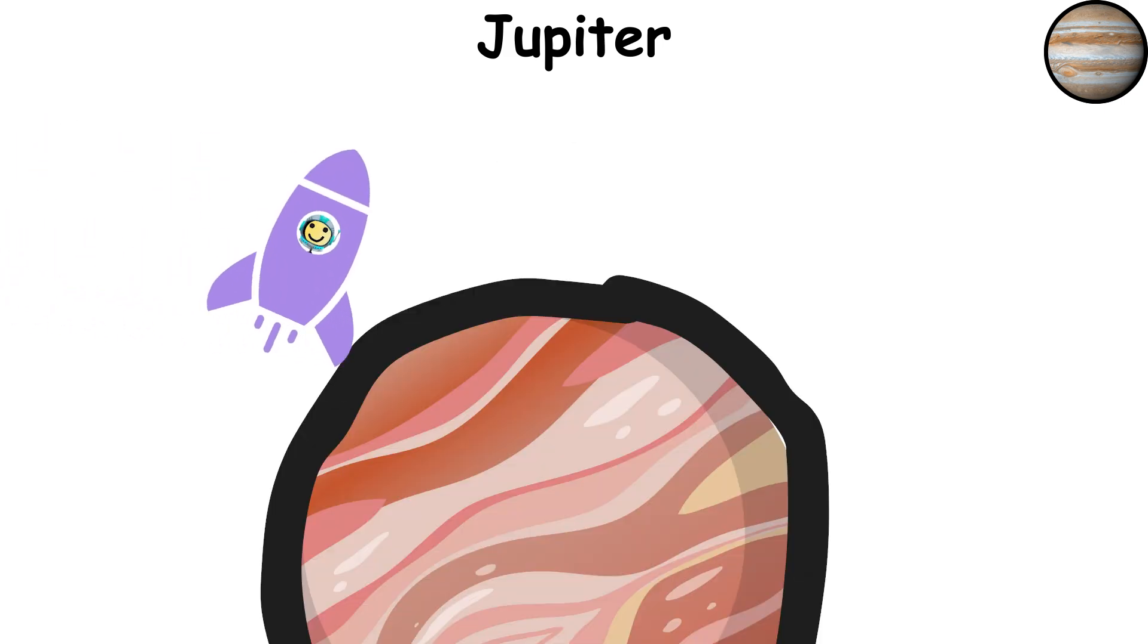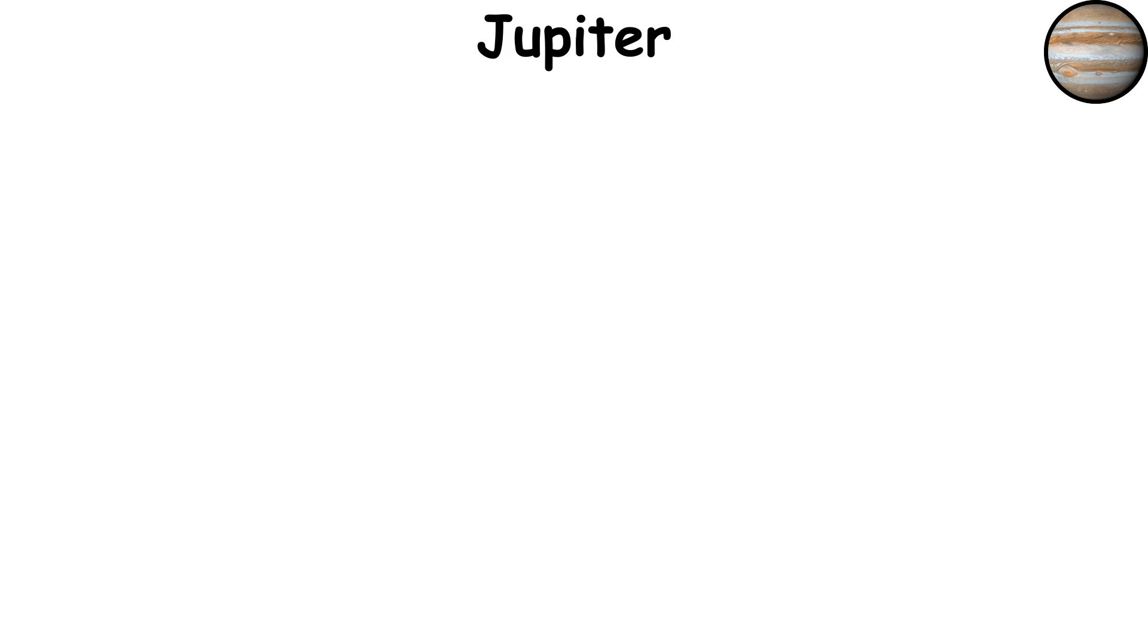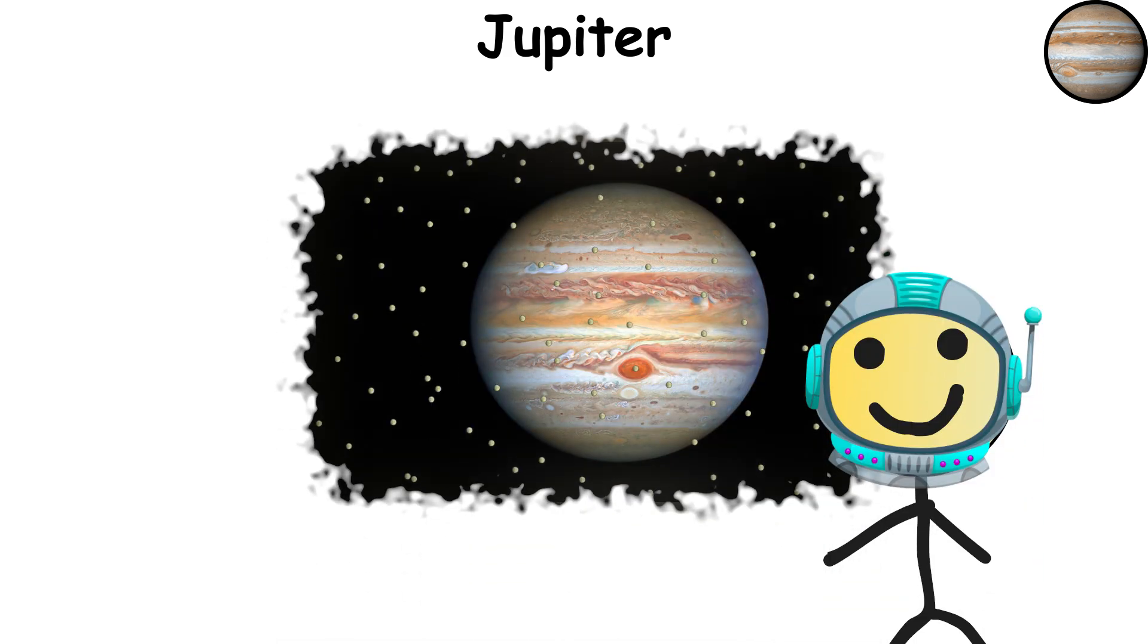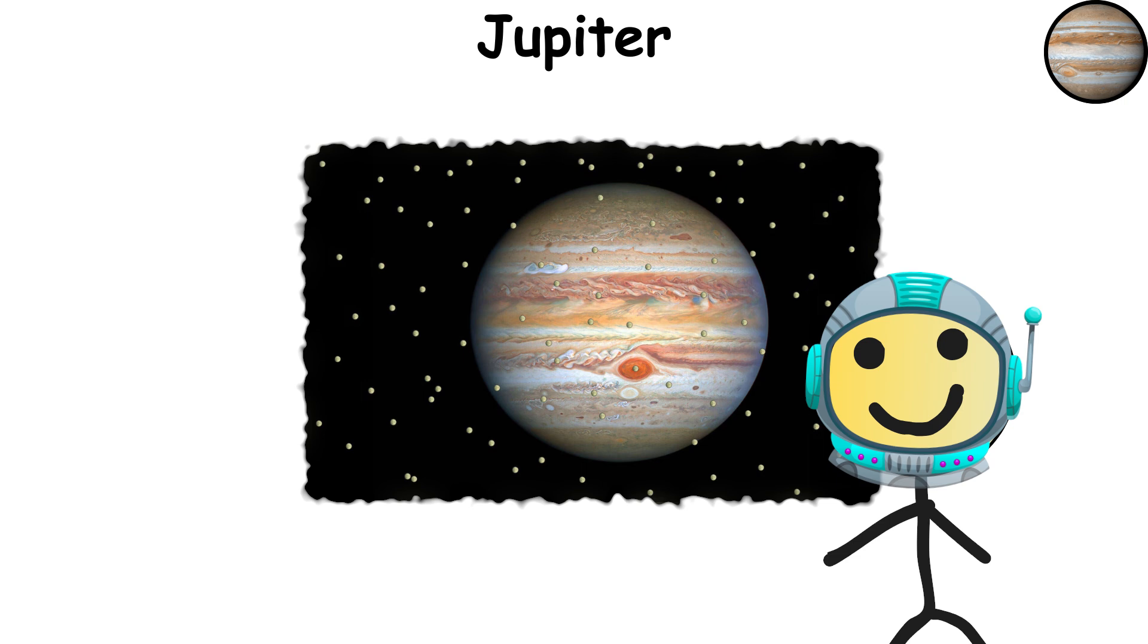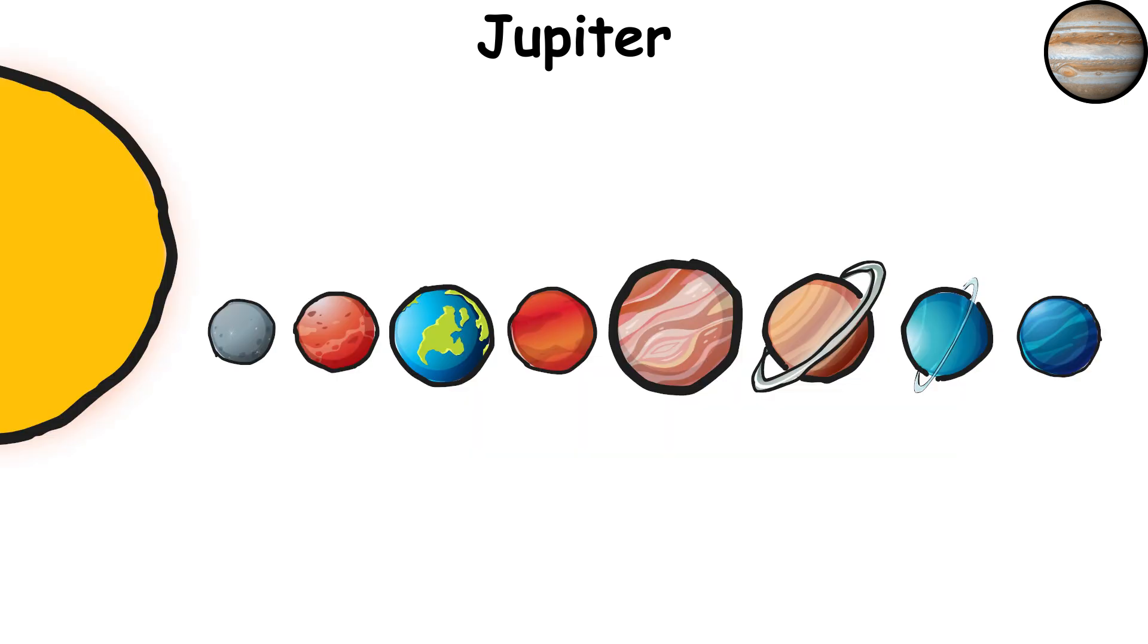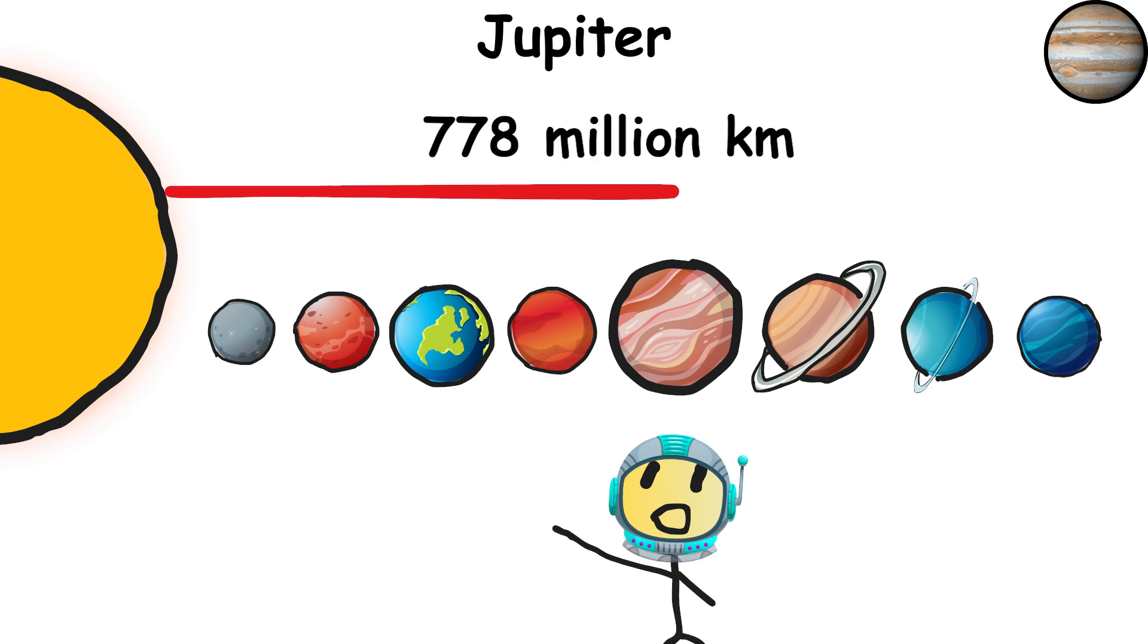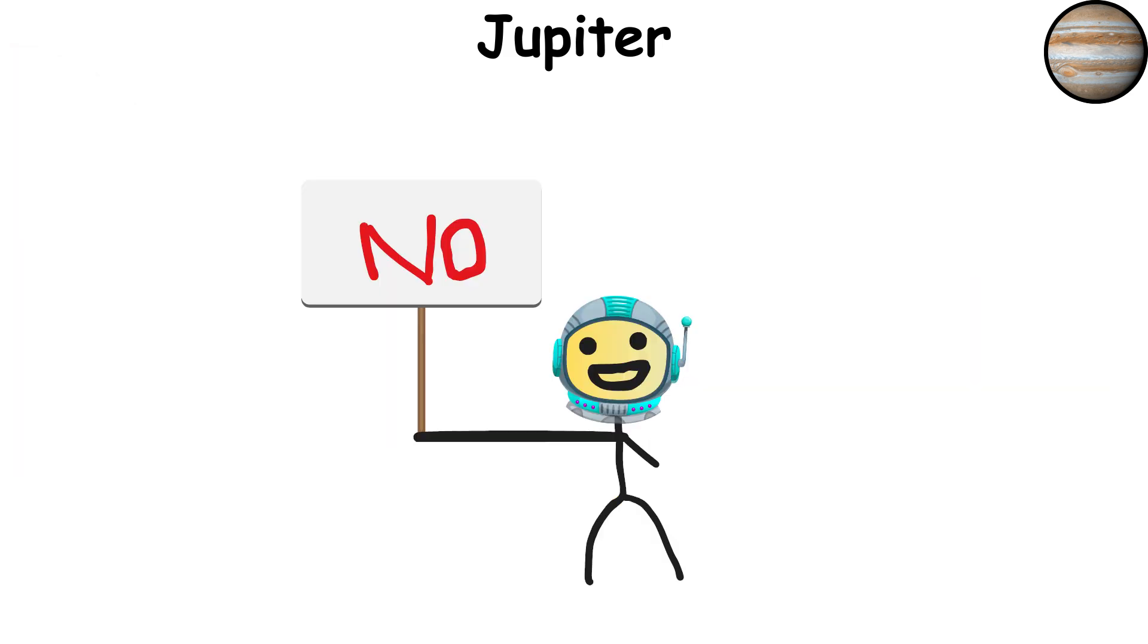Don't even think about landing here. Jupiter's mostly gas and clouds, so you'd just fall right through. And it has 79 moons, so Jupiter's pretty much showing off at this point. Distance from the sun? A whopping 484 million miles, 778 million kilometers. Life? Unless you're a cloud-dwelling storm-riding alien, probably not.